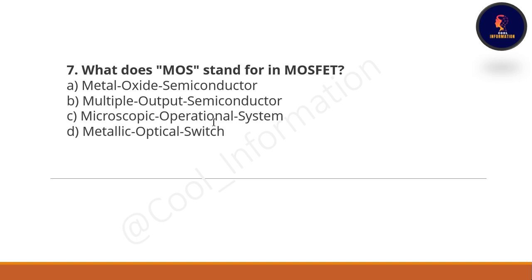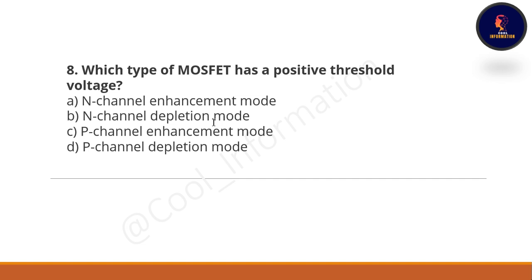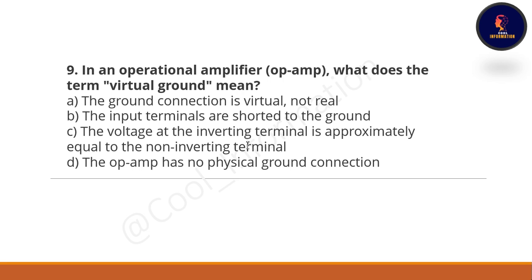Which type of MOSFET has a positive threshold voltage? Option A: N-channel enhancement mode. Option B: N-channel depletion mode. Option C: P-channel enhancement mode. Option D: P-channel depletion mode. The correct option is P-channel enhancement mode.